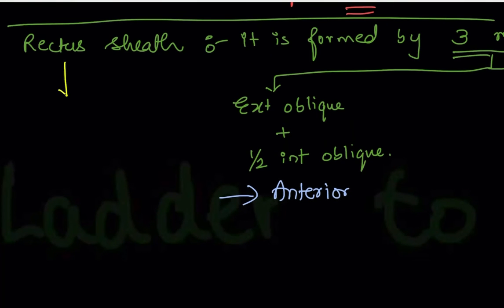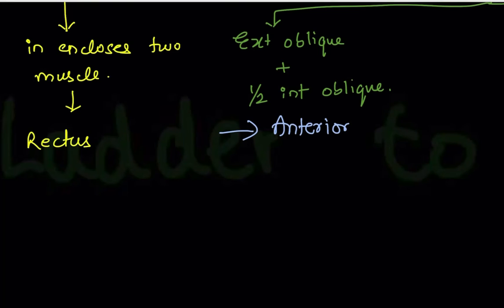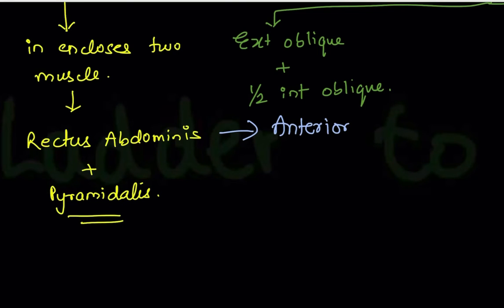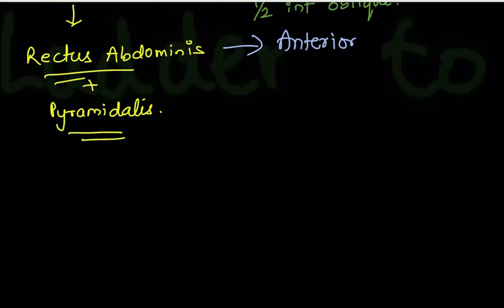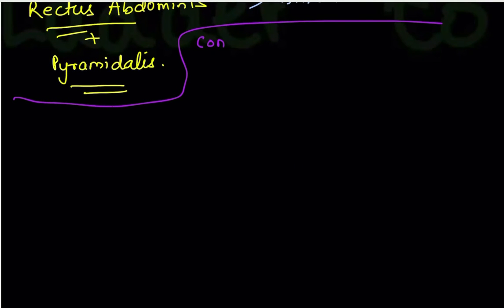The rectus sheath encloses two muscles: rectus abdominis — your six-pack abs muscle — and a muscle called pyramidalis. These two together are enclosed within the rectus sheath. Now let's look at the contents of the rectus sheath.